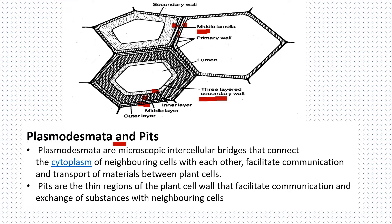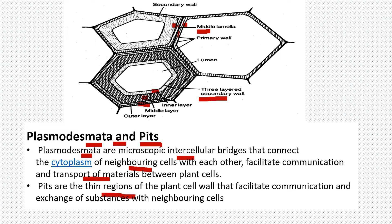Besides the structure of cell wall, there are two important structures also present: plasmodesmata and pits. Functionally both are the same; the only difference is their structure. Plasmodesmata are microscopic intercellular bridges that connect the cytoplasm of two neighboring cells, and their function is to ensure communication and transport of material between plant cells. Pits are thin regions of the plant cell wall that also facilitate communication and exchange of substances between neighboring cells.